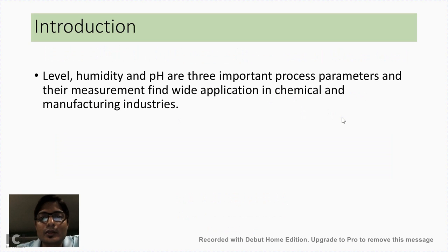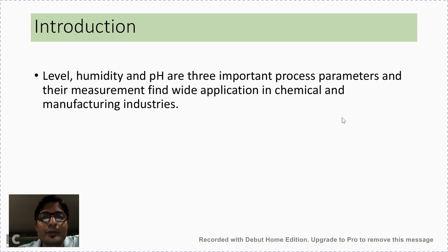Level, humidity and pH are three important process parameters and their measurement finds wide applications in chemical and manufacturing industries. In beverages industry, soft drinks need to have a proper value of pH so that it is not harmful to the human digestion system. Therefore it is very much essential to maintain the pH value to the standards set by the authorities, and it is continuously required to monitor the pH value of the beverages.